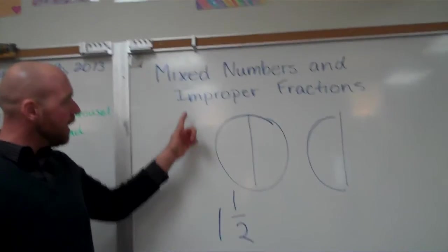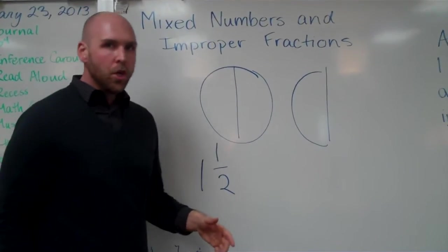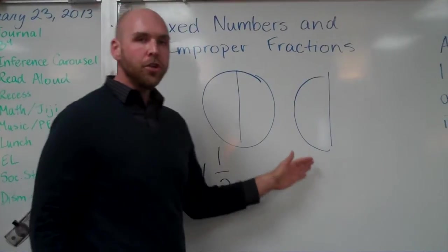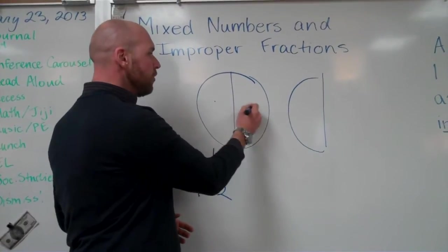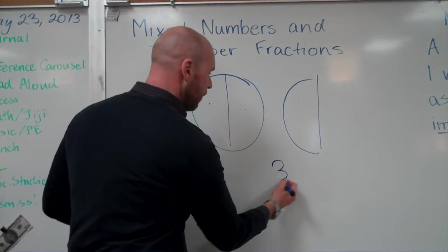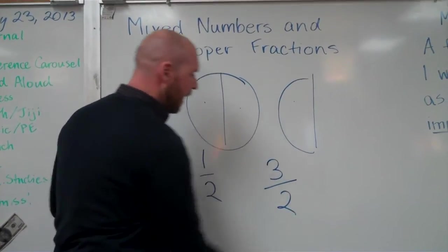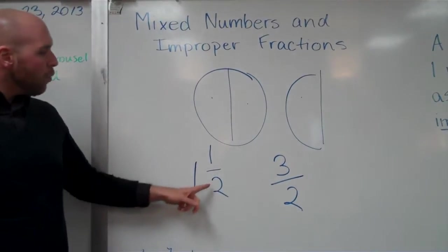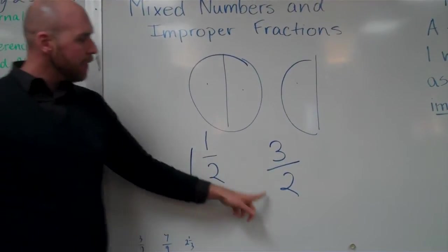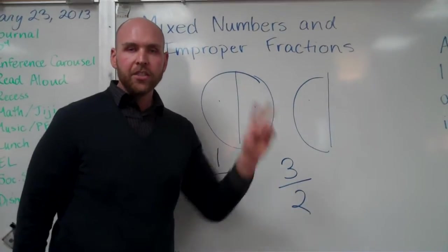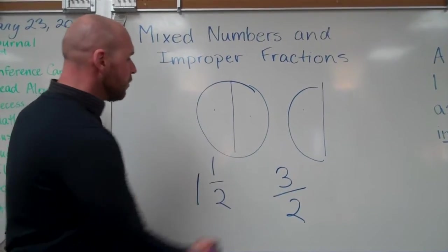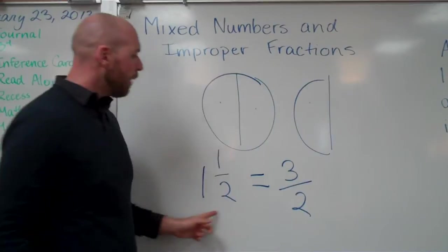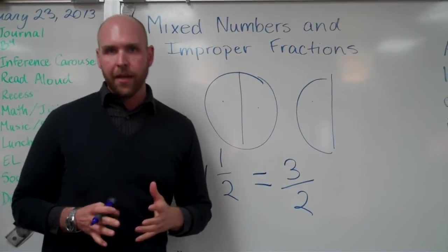Now in an improper fraction, the top number, the numerator is going to be larger than the denominator. So I have one, two, three halves. Three halves. One and one half and three halves are equal. It's just two ways of expressing a fraction that's greater than one whole. So these are actually equal but two different ways to say it.